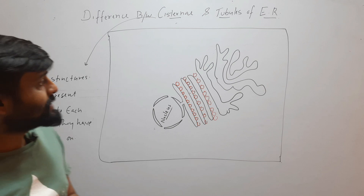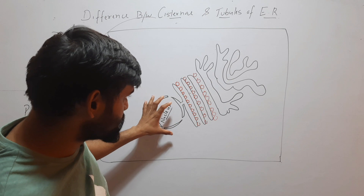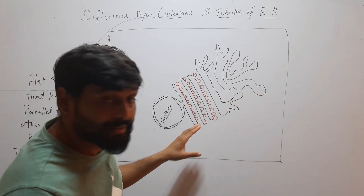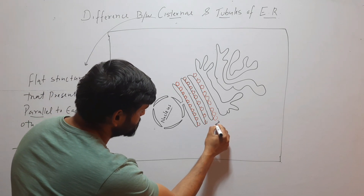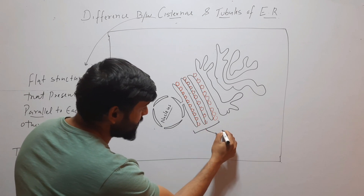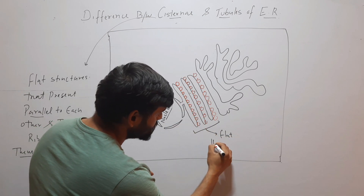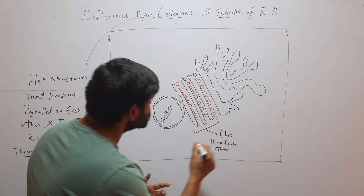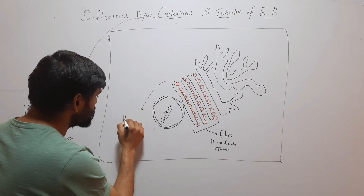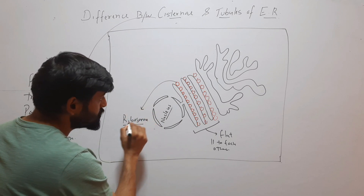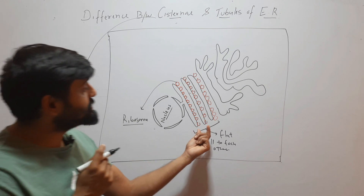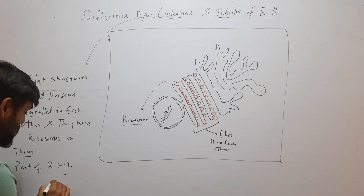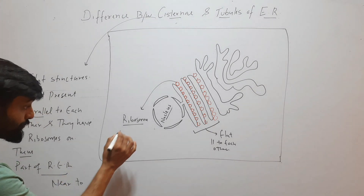Here you can see a portion of the endoplasmic reticulum, and this is the nucleus. The structures which are flat and parallel to each other — you can see that these structures are flat and parallel to each other, and they are studded with ribosomes. These structures are part of rough endoplasmic reticulum, and these cisternae are present near to the nucleus.